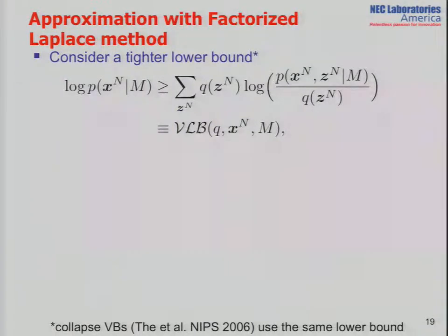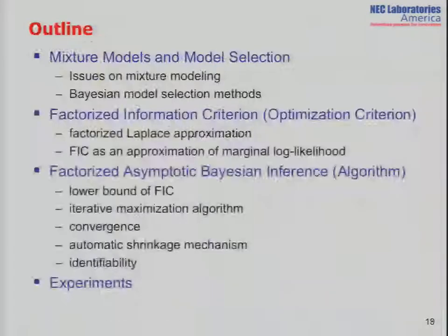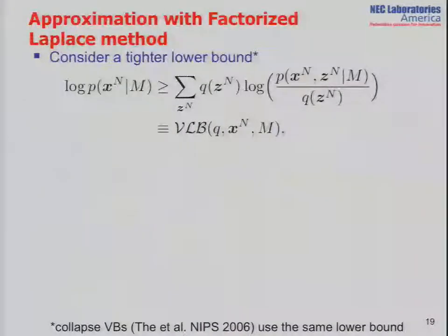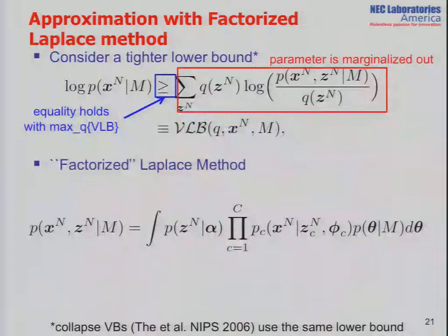Let us consider a tighter lower bound, also used by the collapsed variational Bayesian method. In this representation, parameters are integrated out. Compared to standard VB, we do not assume anything on the variational distribution but just marginalize out. The equality holds by maximizing Q, so maximizing Q gives the same result as the marginal log likelihood. We notice the numerator here — this is the marginalized complete likelihood.